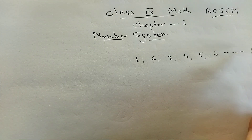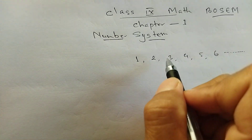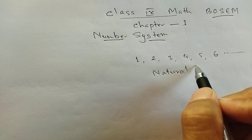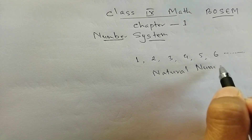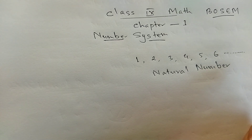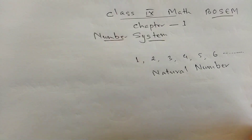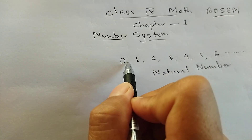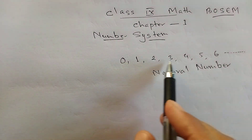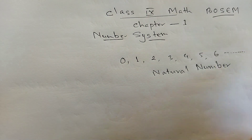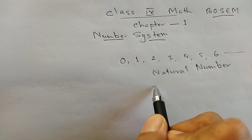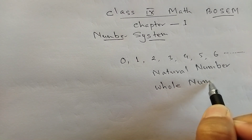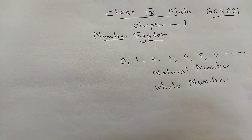If you want to count 1, 2, 3, 4, 5, 6 — you can count 1 to 10. These are the counting numbers. The whole number is included as well.